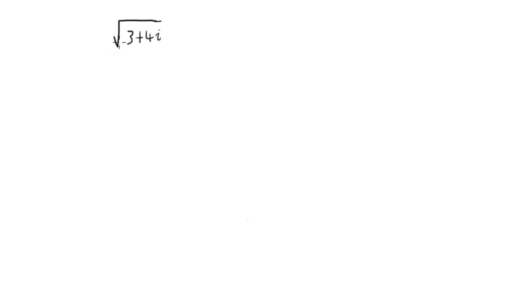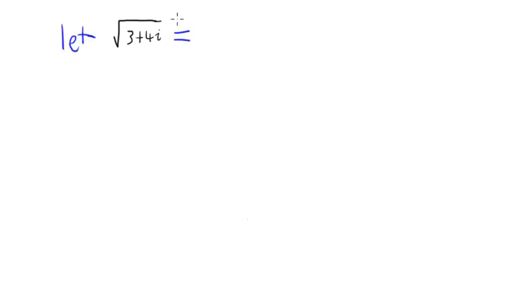In this video I'm looking at taking the square root of the complex number 3 plus 4i, and I'm going to leave my answer in standard form. To find the square root of a complex number in standard form, we know that we will get some complex number out in standard form, which means we can let this square root of 3 plus 4i equal a plus bi, because we know we're going to get some real number plus some real number i.